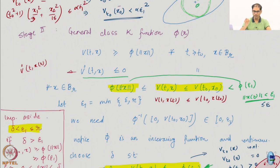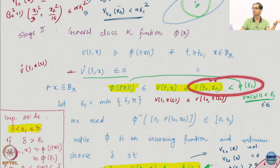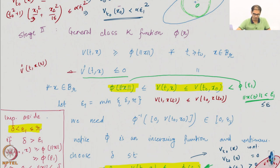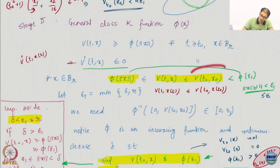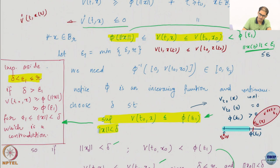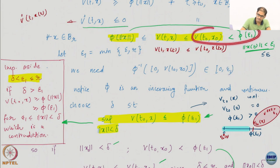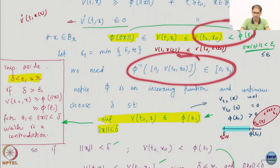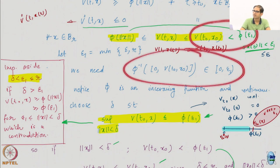So, if φ(‖x‖) < φ(ε₁), then ‖x‖ < ε₁. So if I can prove this — just like before, instead of α·ε₁² I just have φ(ε₁) — then I am done. This condition is rewritten by taking φ⁻¹ on the left-hand side: I want φ⁻¹ of the interval (0, V(t₀,x₀)) to lie within (0, ε₁).